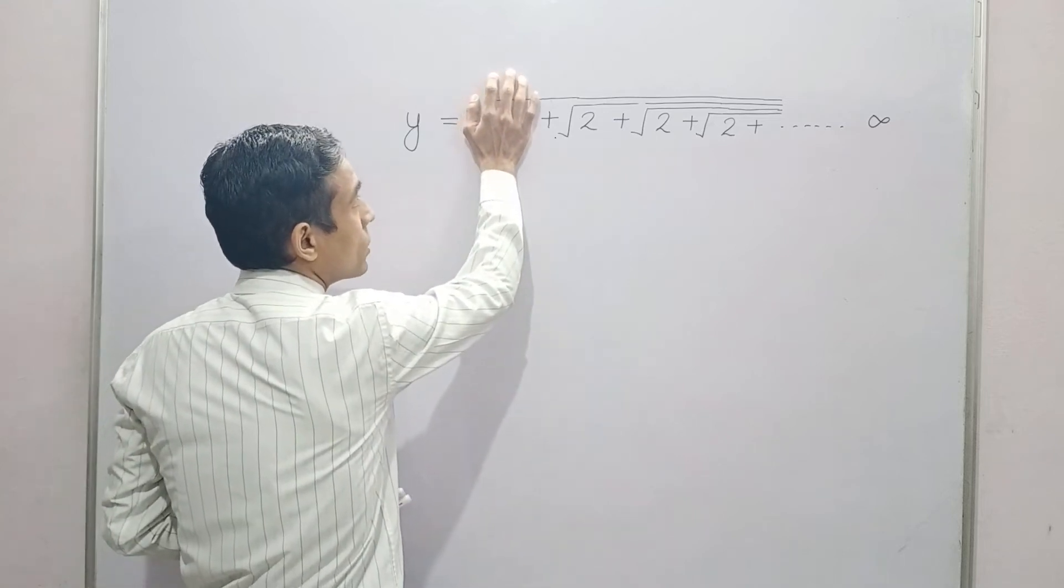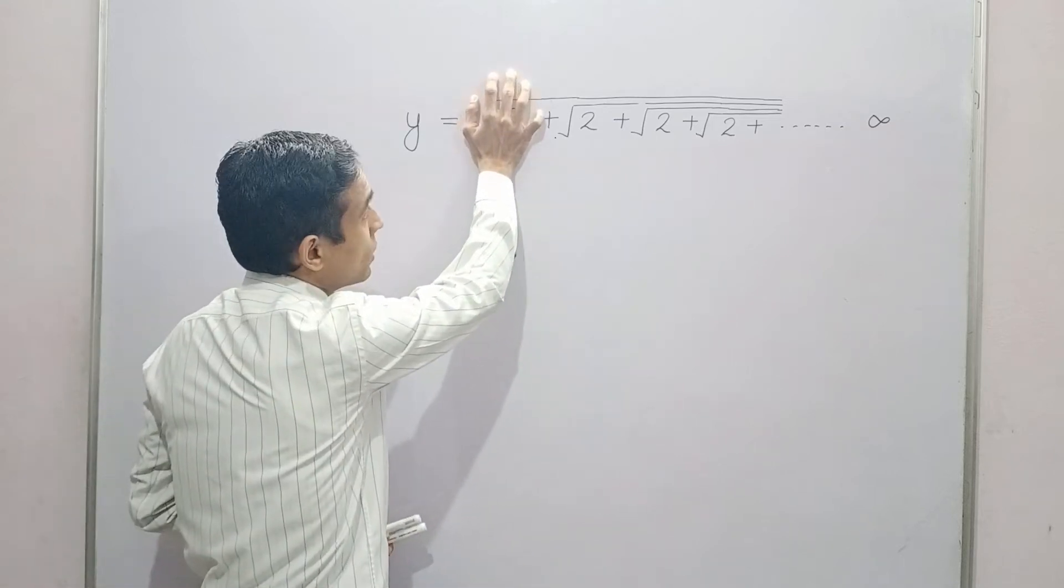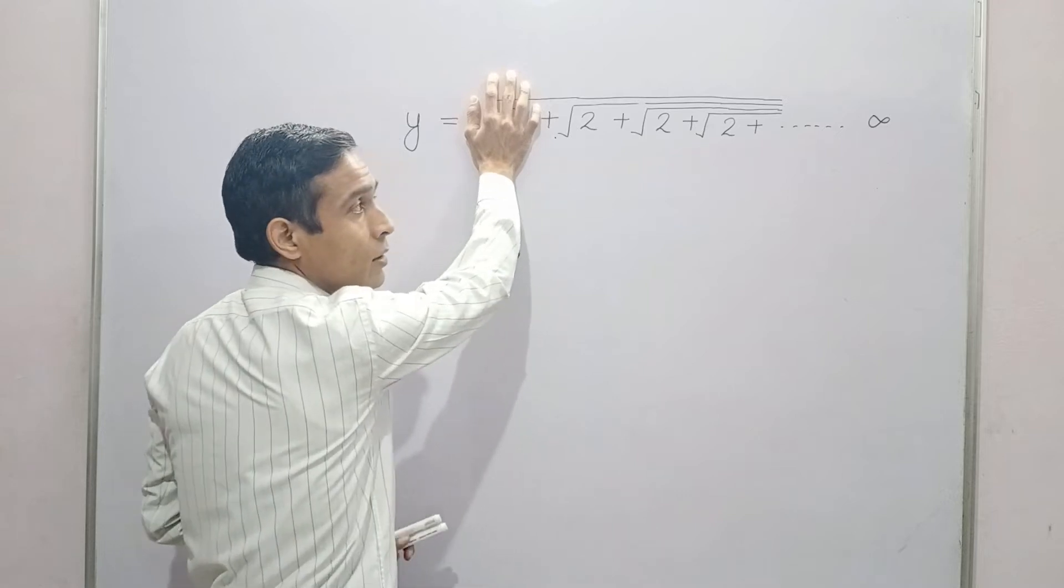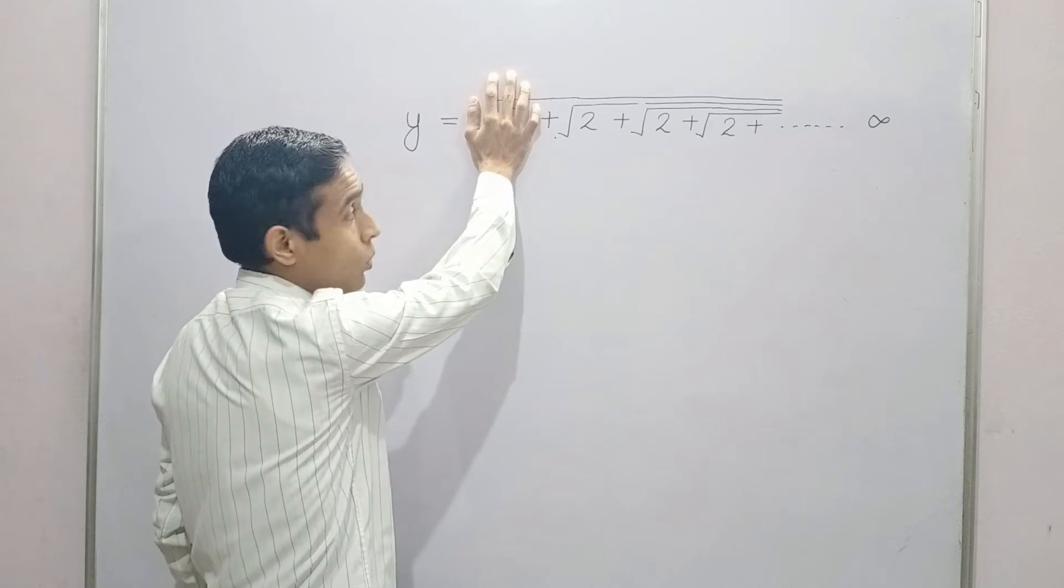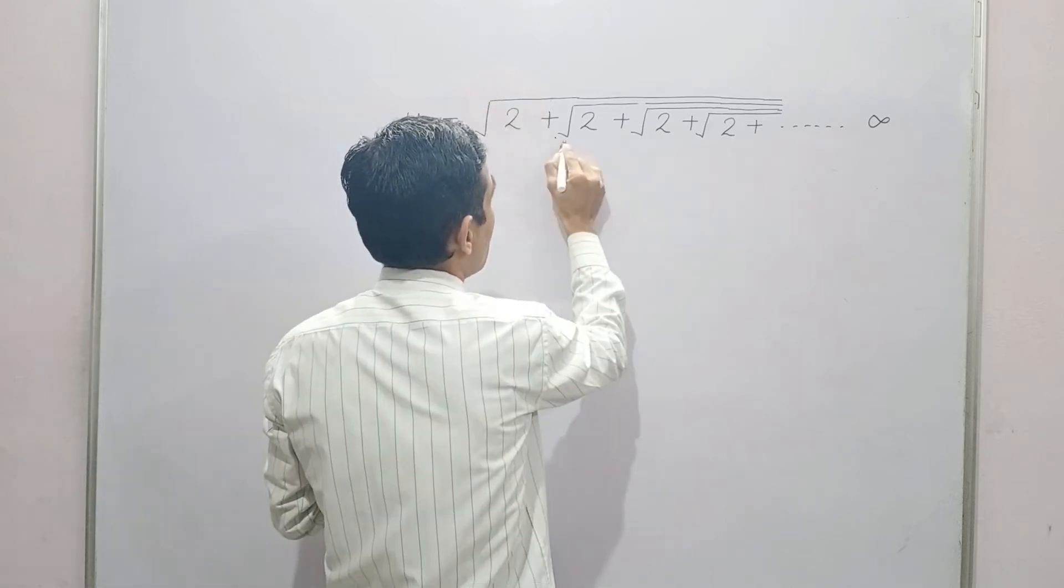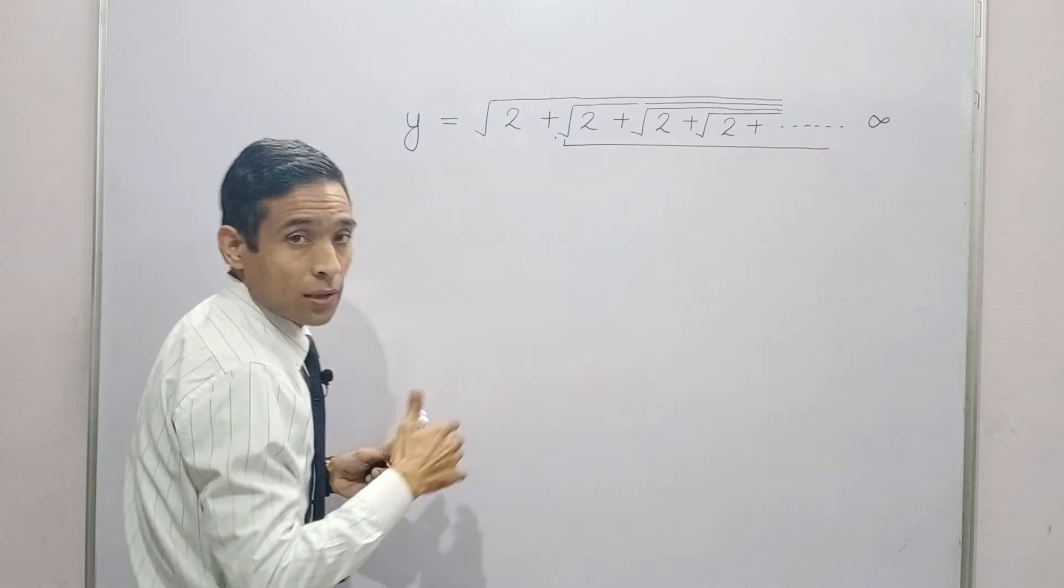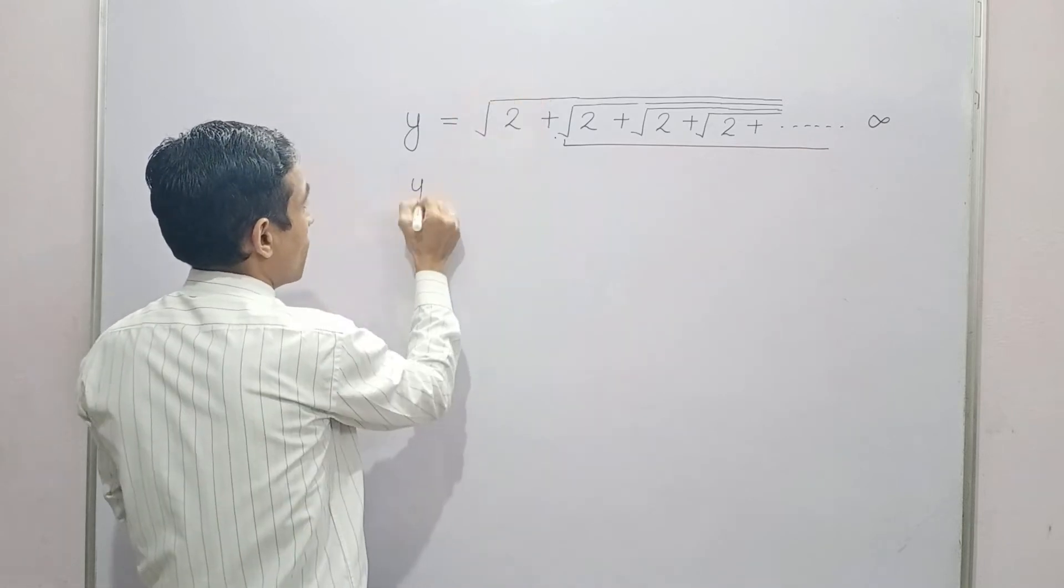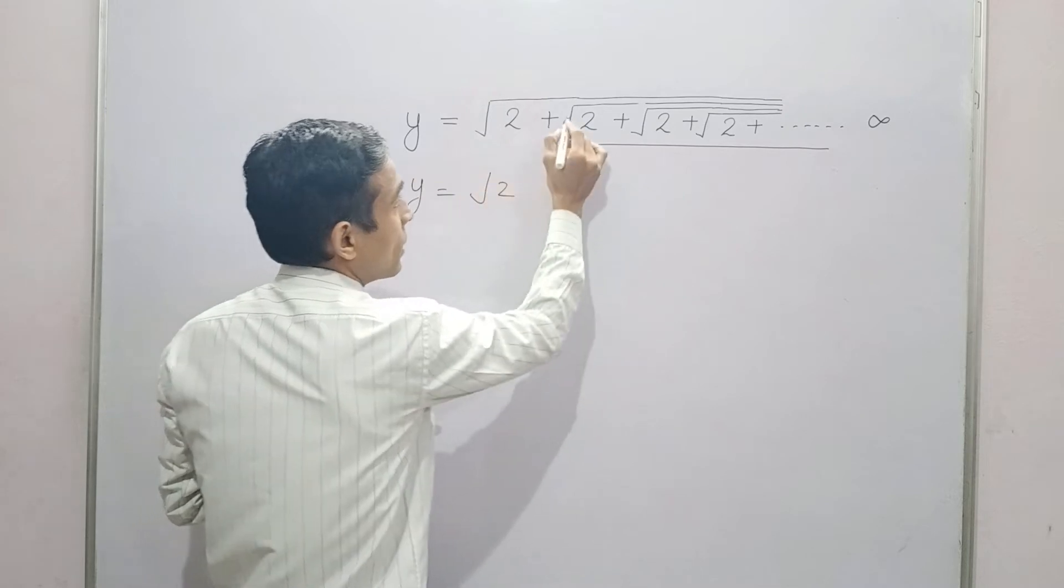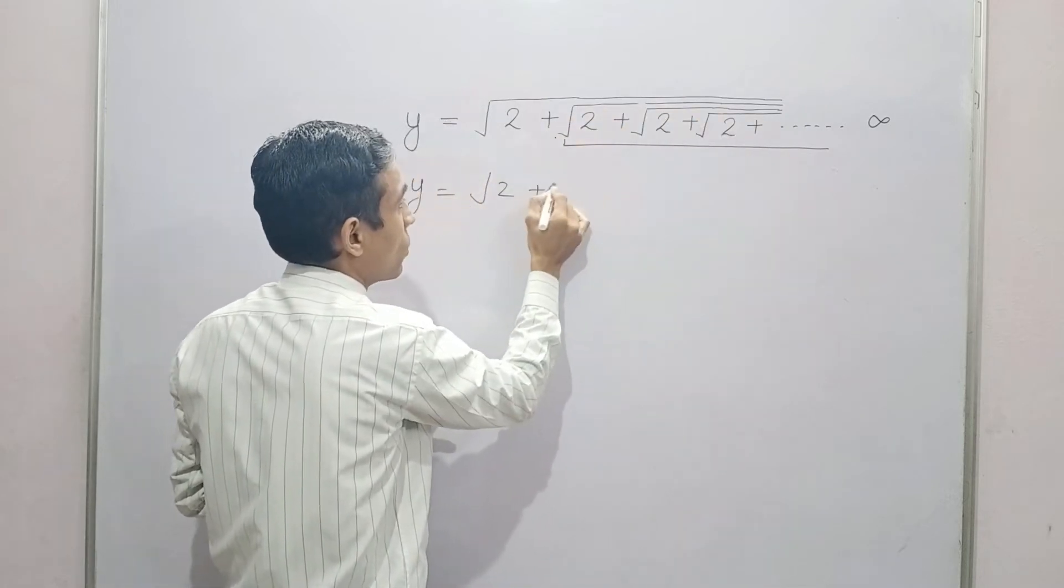If I remove this first square root, will it affect the rest of the equation on the right hand side? No. We can still write the values of these other square roots as y. So I can replace this whole value as y.